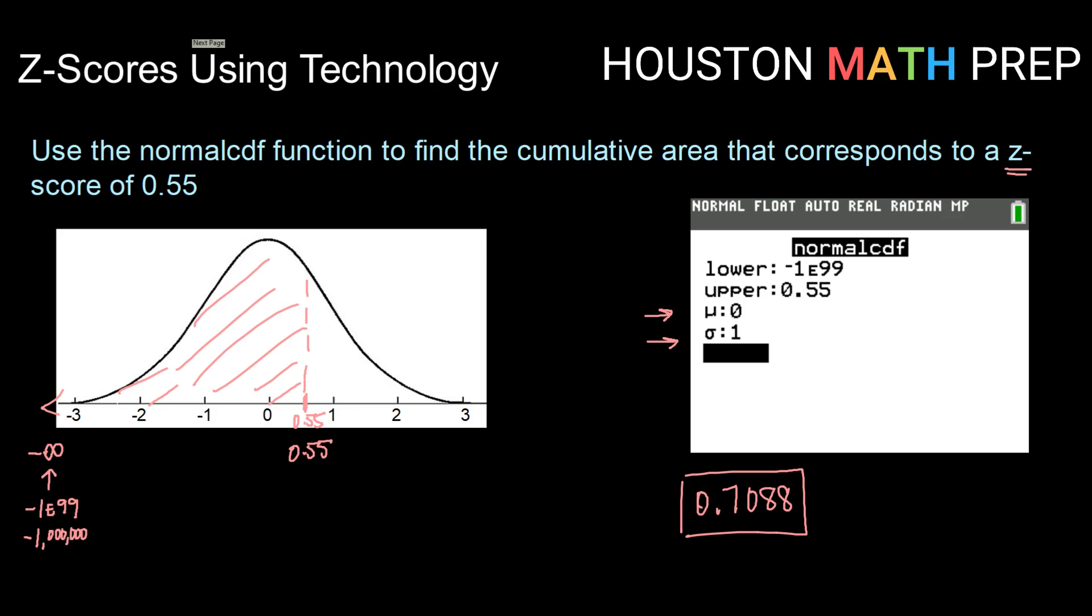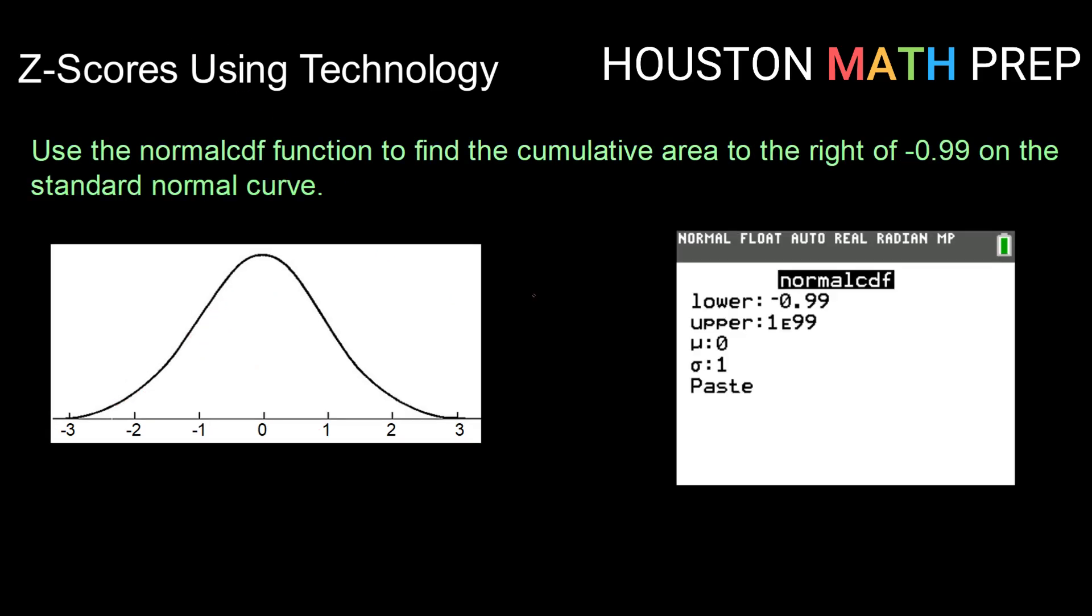Alright, let's see that again. Use the normal CDF function to find the cumulative area to the right of negative 0.99 on the standard normal curve. On the standard normal curve means we're here again at mean of 0, standard deviation of 1. To the right of negative 0.99, well, negative 0.99 is about right here. And if I want to be to the right of that, to the right is above, so that's going to be this area.